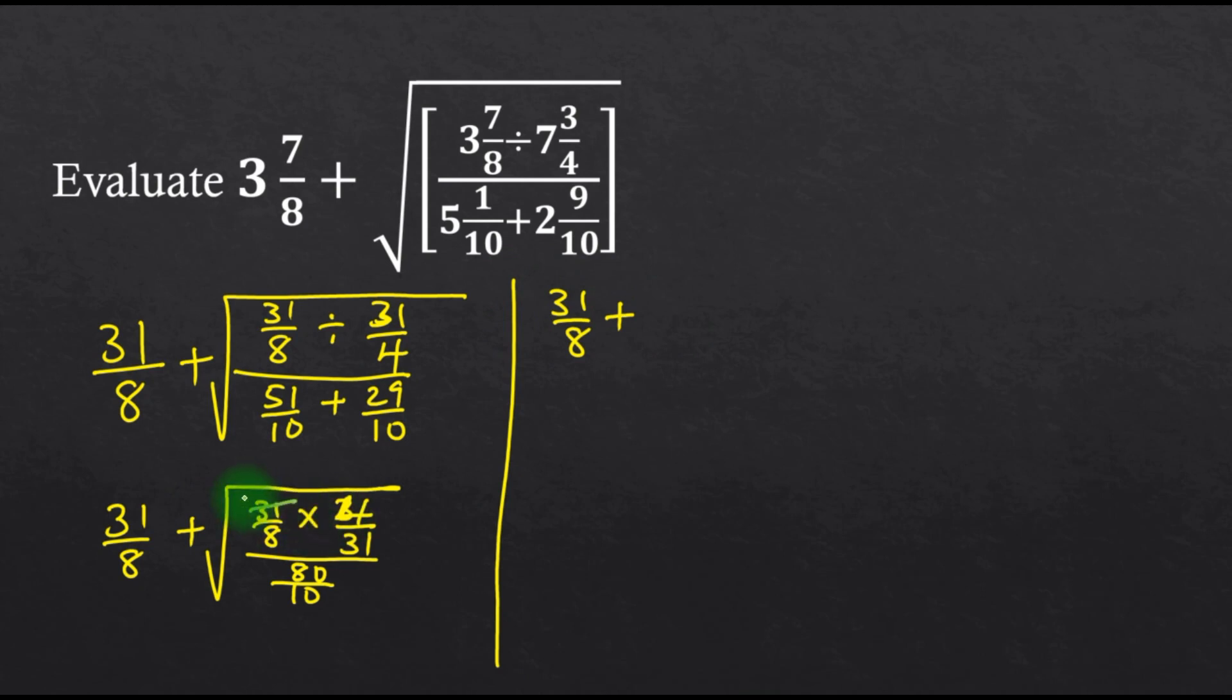Now let us divide this: 31 by 31 is 1, 1 by 4 is one-quarter. So that will be one-half.